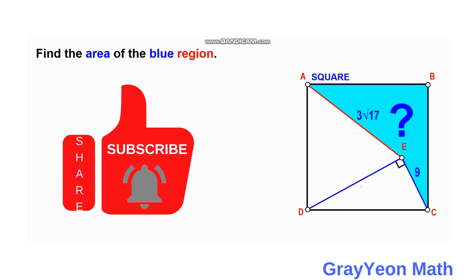There is also an unknown length ED, which is a leg of this right triangle EDC with its hypotenuse to be the length DC, which is the side of the square. We are required to find the area of this blue region.